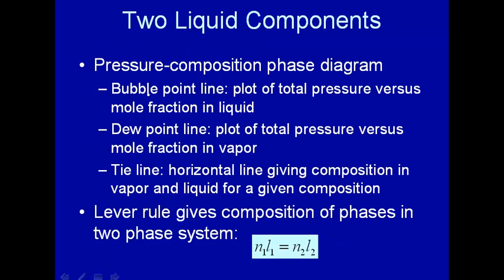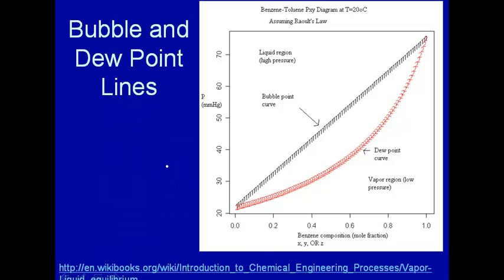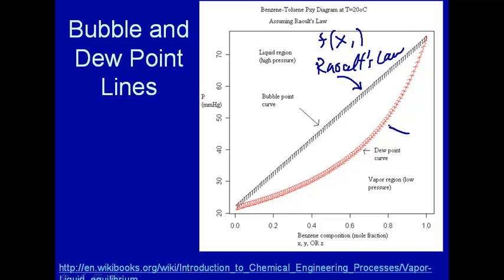Here is a typical plot using benzene-toluene, which is almost an ideal mixture — a two-component system. We plot the total pressure above the solution as a function of mole fraction of benzene, component 1. The straight line is Raoult's law — total pressure as a function of mole fraction in the solution. If we take the same data and plot it as a function of mole fraction in the vapor phase, we get a curved line instead of a straight line. The straight line is called the bubble point curve, and the curved line is called the dew point line.